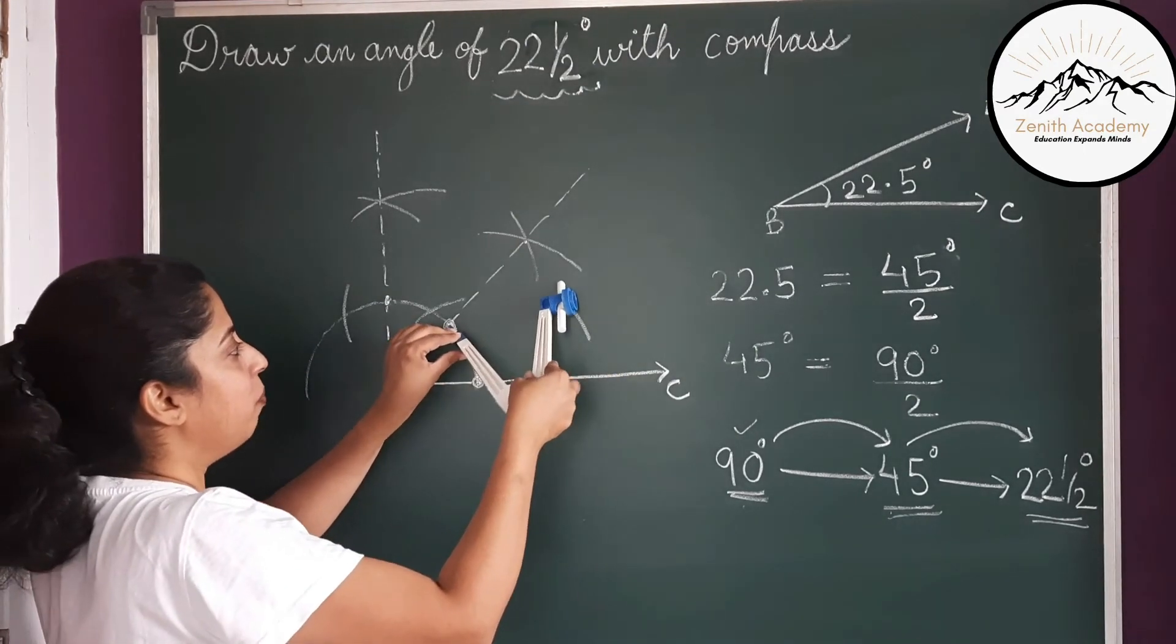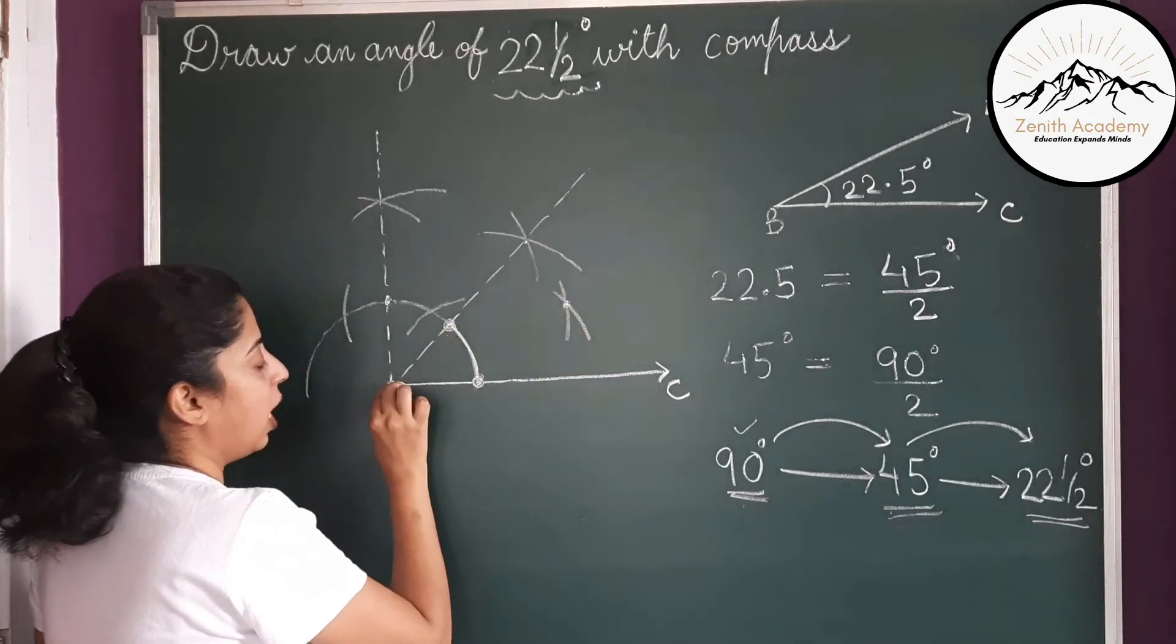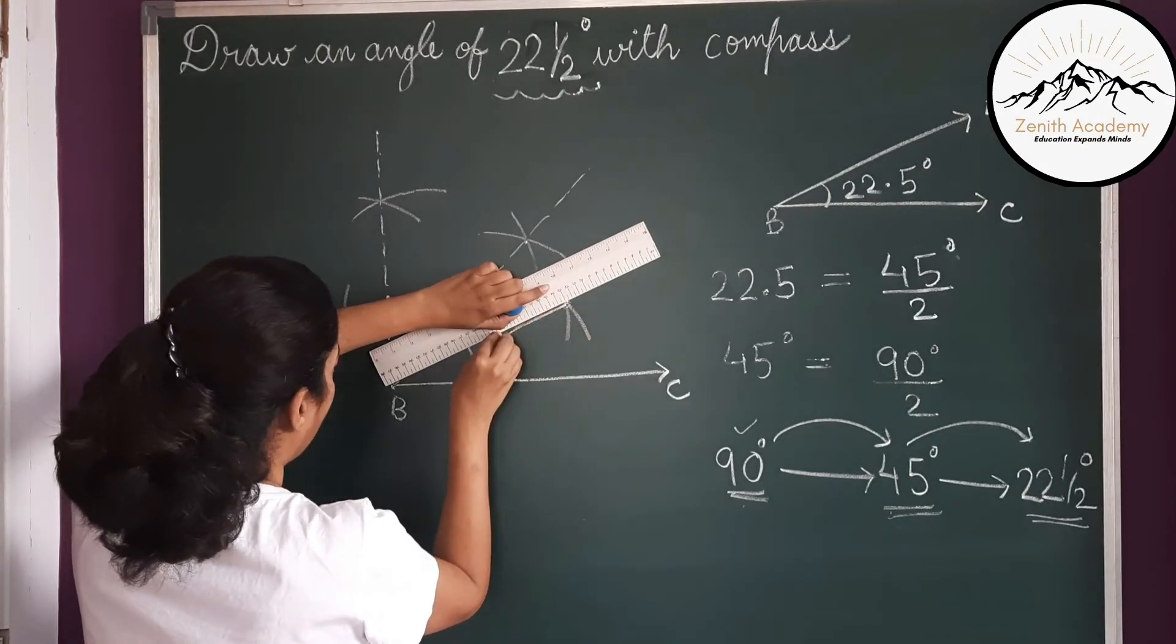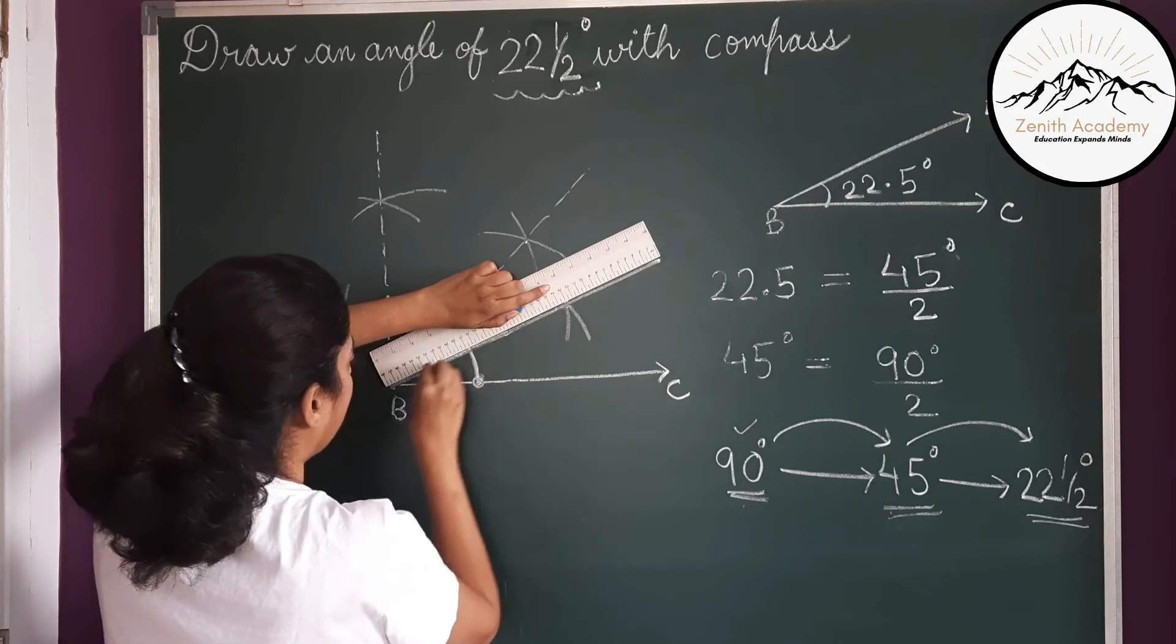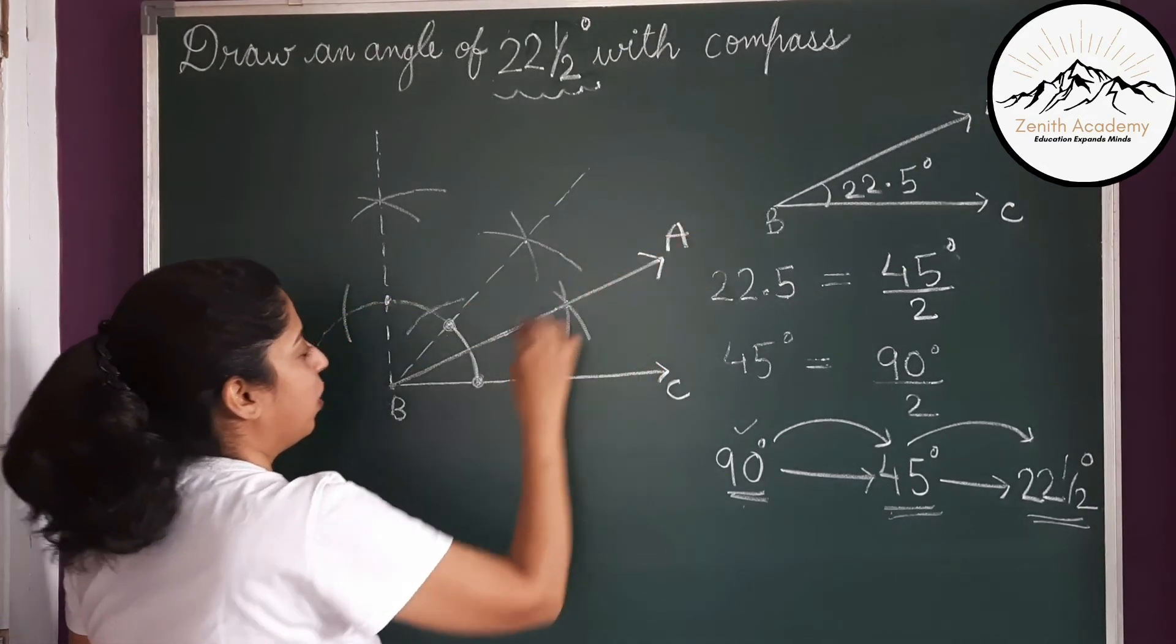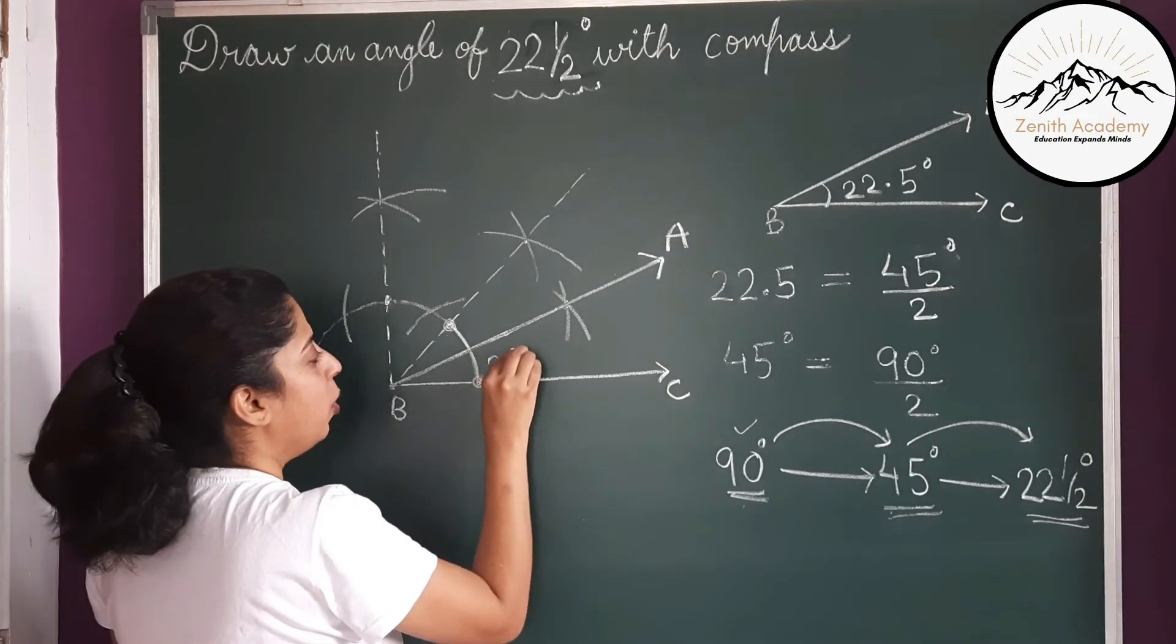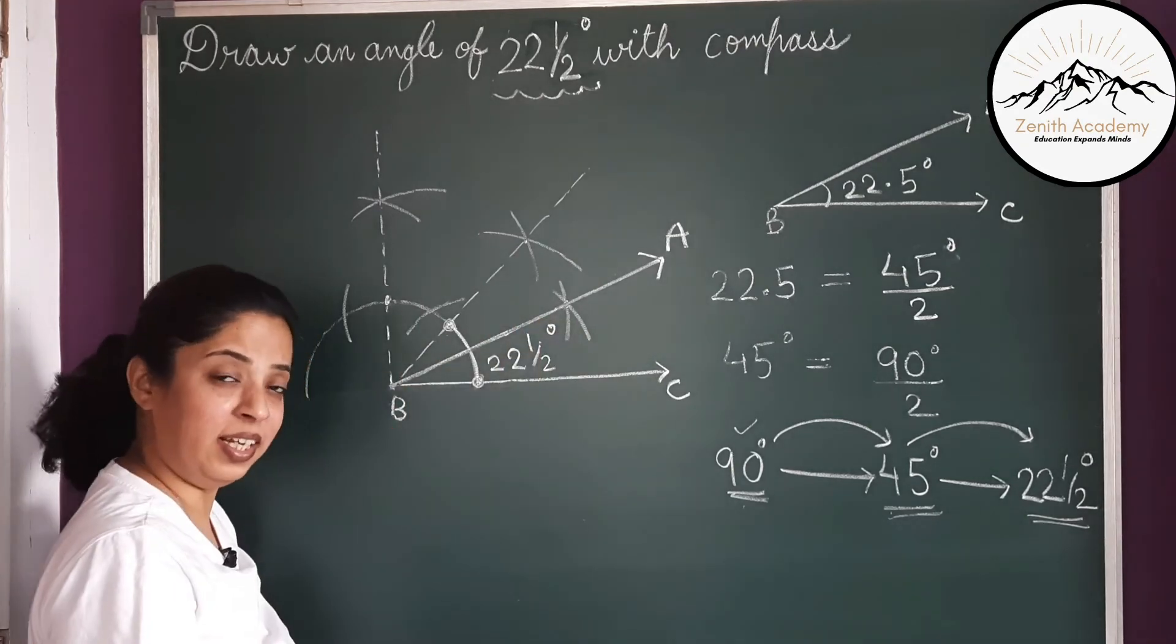Cut the previous arc. So now join this point and your vertex B. And now you can name this as A because this is now the angle bisector of 45 degrees. So this is now 22 and a half degrees or 22.5 degrees.